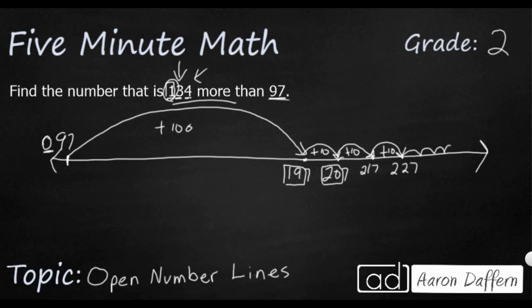Each of those hops is plus 1, plus 1, plus 1, plus 1, done individually. So I'm going to take my 227 and just add 1: I've got 228. I've got 229. I've got 230. And now I've got 231.